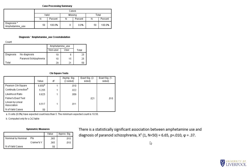To interpret phi: a value of 0.1 is considered a small effect, 0.3 a medium effect, and 0.5 and above is a large effect. In this case we'd write phi = 0.37, which indicates a medium effect size.